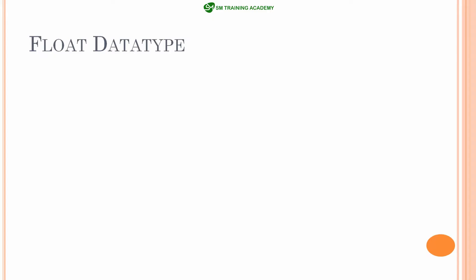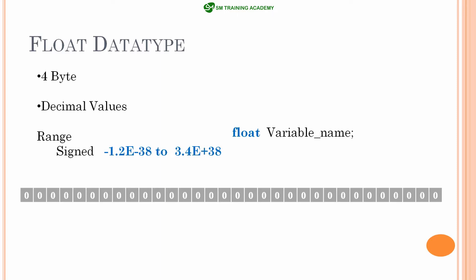The float data type in C is useful for storing decimal point numbers to memory. It holds a maximum size of 4 bytes in CPU memory. Its range varies between minus 1.2 into 10 to the power minus 38 to positive 3.4 into 10 to the power plus 38, covering very small and very large numbers.